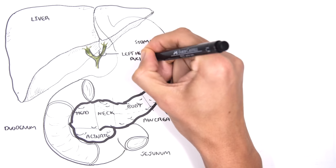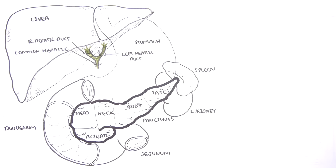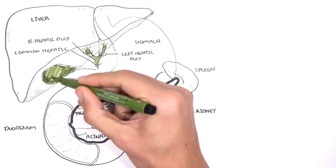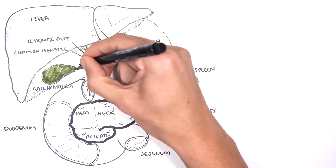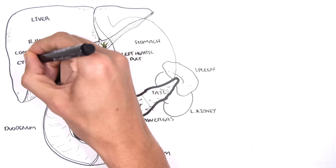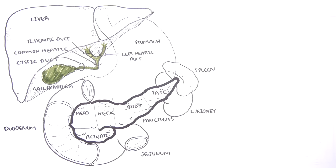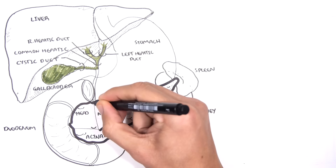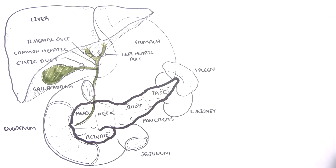Bile is produced and travels from the liver down the right and left hepatic ducts, which merge to form the common hepatic duct. Bile can be stored in the gallbladder — the organ just below the liver — and carried out from the gallbladder into the cystic duct.